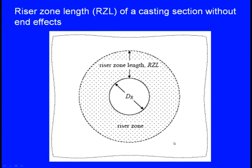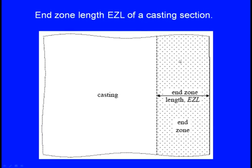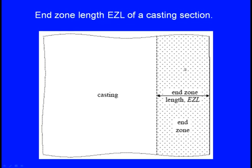Riser zone length (RzL): if only riser effect is considered with no end effect and a cylindrical riser, the riser zone will be a cylindrical region in which there is no shrinkage. End zone length (EzL): due to end effect alone, this much portion will have no shrinkage.